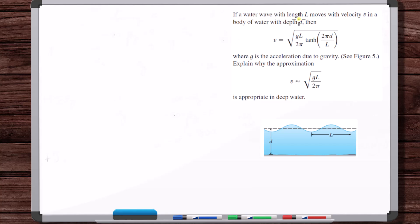If a water wave with length L moves with velocity V in a body of water with depth D, then the velocity of the water wave is given by this formula, where G is the acceleration due to gravity.